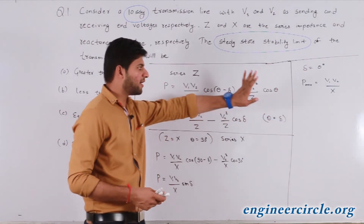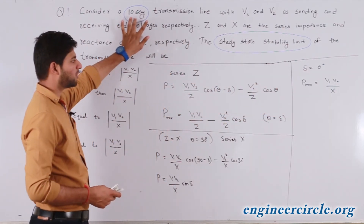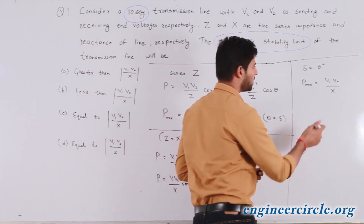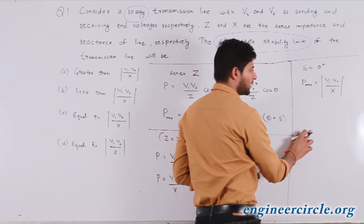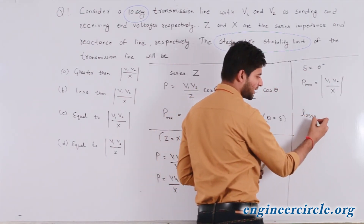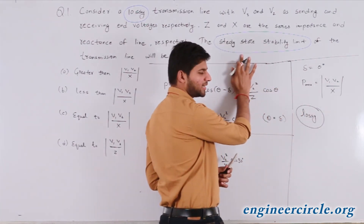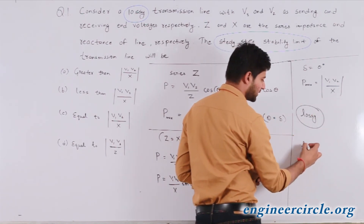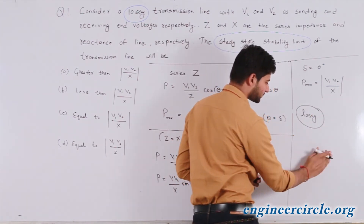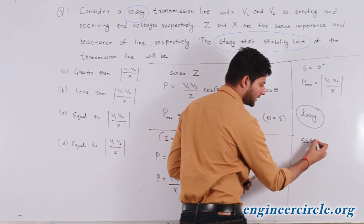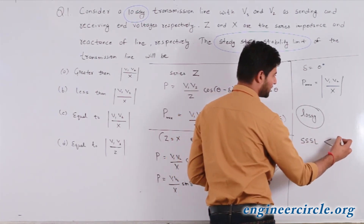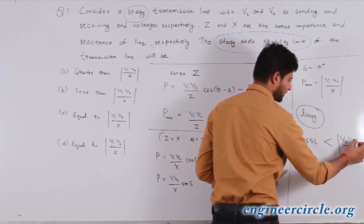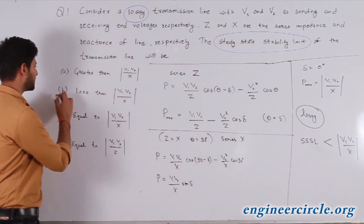But as we have to consider a lossy transmission line, the value of maximum power flow possible through the transmission line must be less than V1V2/X in magnitude. Hence, in the case of a lossy transmission line, the steady state stability limit will be less than V1V2/X. The correct option that satisfies our answer is B.